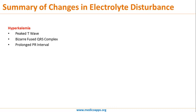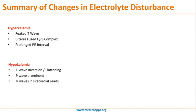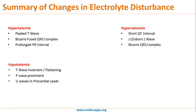To summarize the ECG changes: in hyperkalemia, the typical findings are peaked T wave (the earliest sign), bizarre fused QRS complexes where the P and T waves appear to combine, and prolonged PR interval. In hypokalemia, the findings are T wave inversion or flattening, prominent U waves in precordial leads, and a broad P wave. The main differentiator is peaked T wave in hyperkalemia versus T wave flattening in hypokalemia. In hypercalcemia, look for short QT and Osborne/J waves; in hypomagnesemia, look for prolonged QT interval.